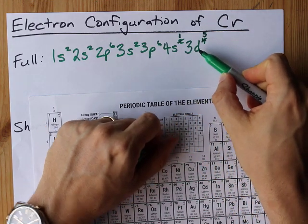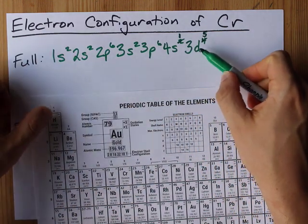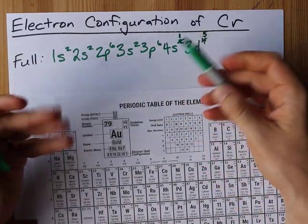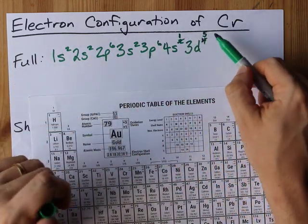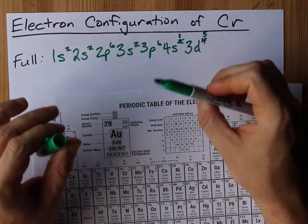So a d subshell which can hold up to 10 electrons has some extra stability just for having 5 electrons in it. That's exactly half.